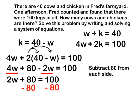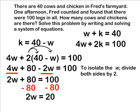To get w by itself, we subtract 80 from both sides of our equation. This leaves us with 2w equals 20.